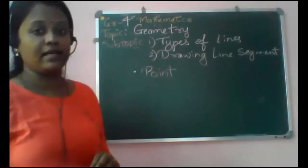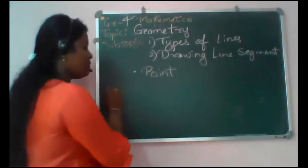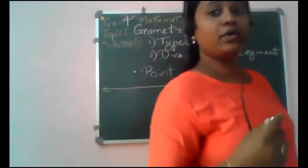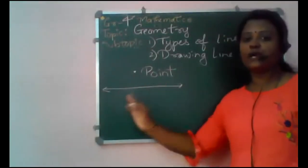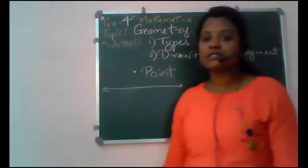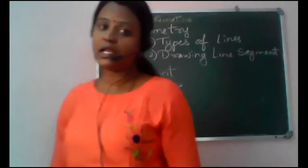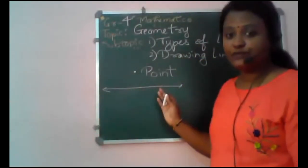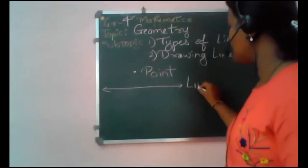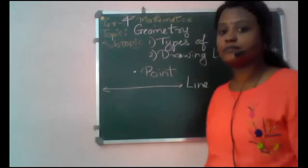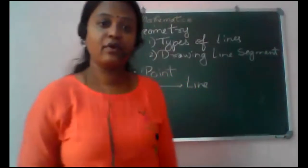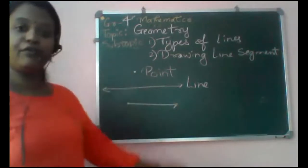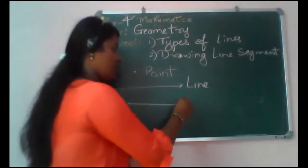The second component is a line. If we have a straight path with arrows on both sides, it specifies there is no starting point and no ending point. An infinite number of points lie on it. This figure is called a line. Whereas if we have one end point and the other side is infinite, it is called a ray.